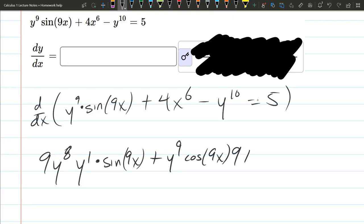Plus 4x to the 6th derivative, 6 times 4 is 24x to the 5th. Derivative of y to the 10th is 10y to the 9th, again times y prime. Derivative of any number 0, so this equals 0.